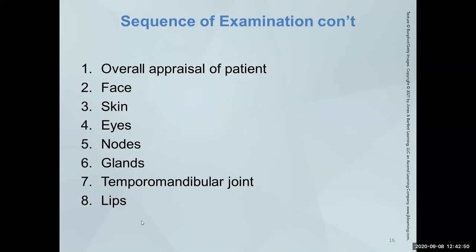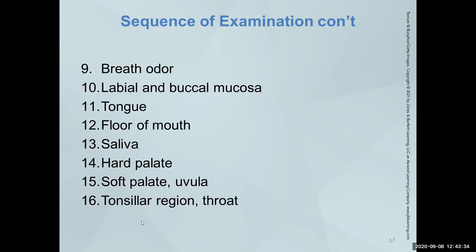The recommended sequence for the exam can be found in Box 12-1, which gives a sequence adapted from the NIH and National Cancer Institute's 'Detecting Oral Cancer' protocol. The overall appraisal of the patient begins when you bring them back from the reception room — that's when your examination begins. Are they shuffling? Do they need assistance? Are they hunched over? Do they look like they have energy? Then you look at the face, zeroing in on the skin, eyes, lymph nodes, glands, and the temporomandibular joint.